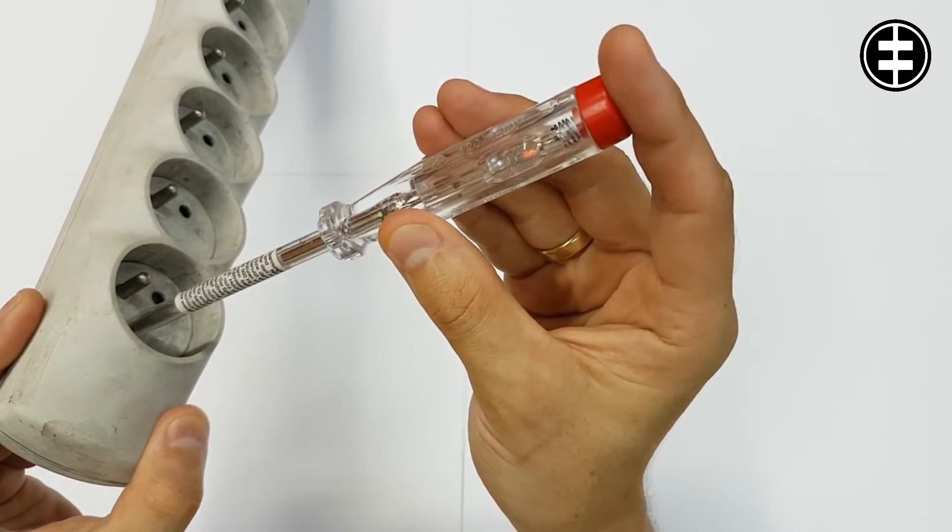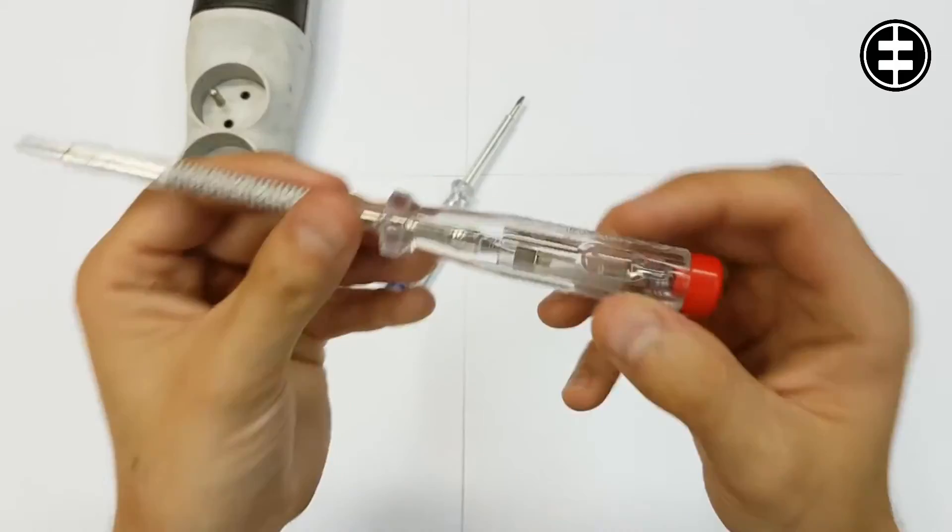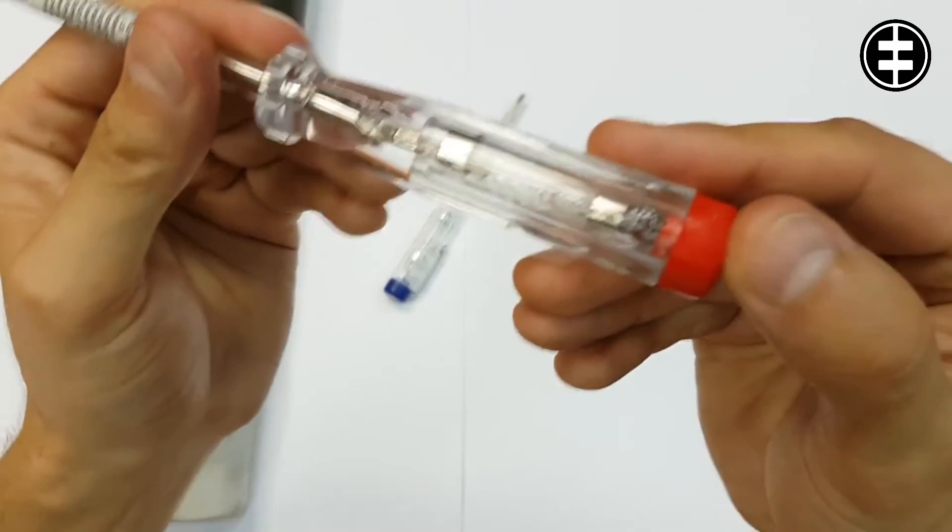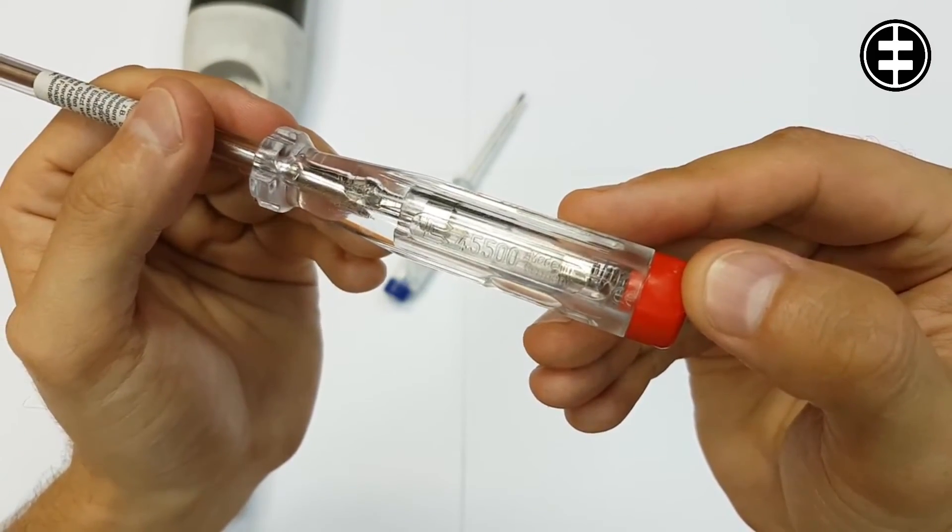To start, we need to know what is inside the tester. Inside the tester you will find the neon lamp, connected with a very high ohm resistance.